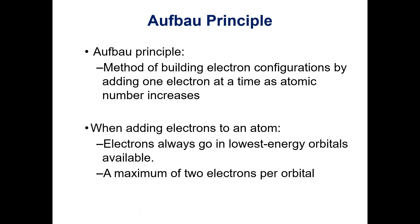When we start adding electrons to an atom, the electrons always go into the lowest energy orbitals first, and we keep adding electrons until we fill up all the electrons we're supposed to have. We can only have a maximum of two electrons per orbital.